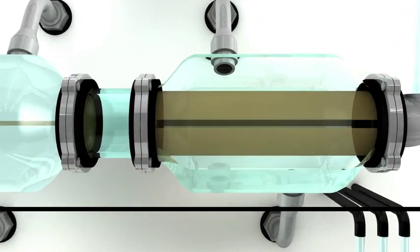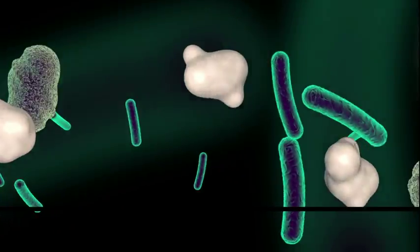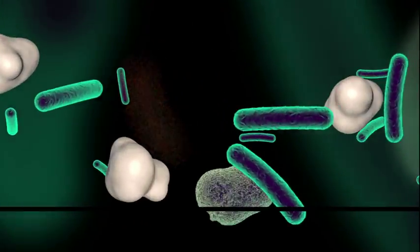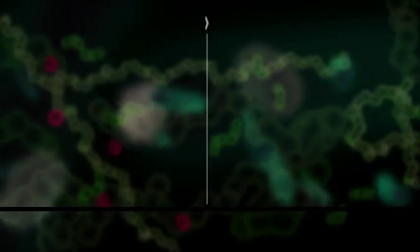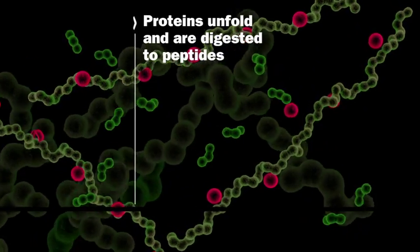When we zoom in, we can see what happens to our meal. Most bacteria from our yogurt will disintegrate and not survive the stomach due to its acidity. A large part of the proteins is unfolded and broken down into smaller peptides by the pepsin.